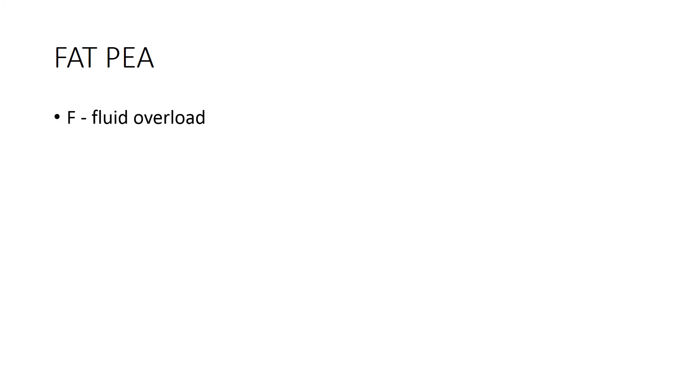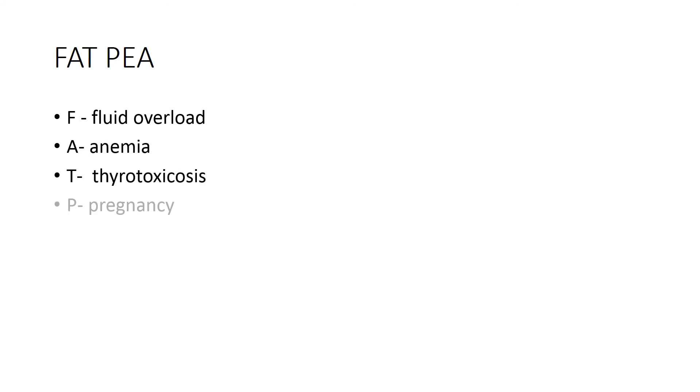Extracardiac causes can be remembered using the mnemonic FATPEA: F for fluid overload, A for anemia, T for thyrotoxicosis, P for pregnancy, E for exercise, and A for AV fistula.